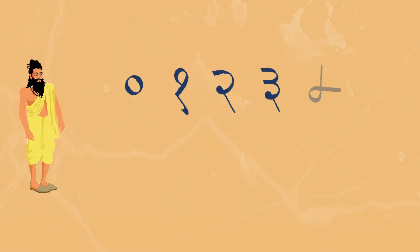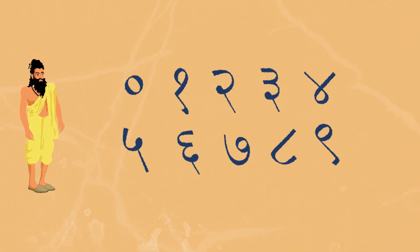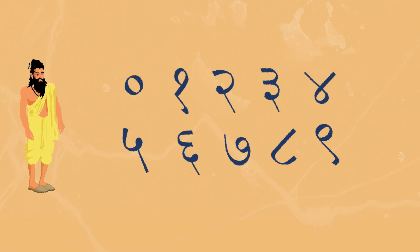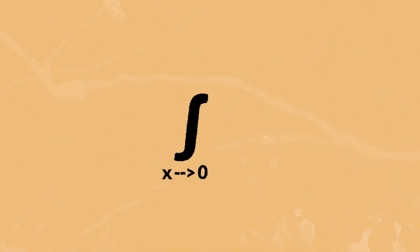But it was when Indians began developing their own number system that zero was defined clearly. As math evolved from practical applications to abstract functions, zero formed the cornerstone of calculus.